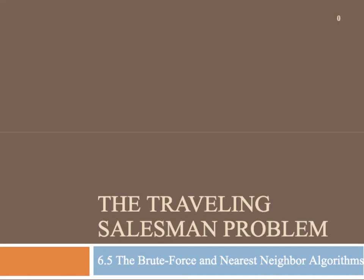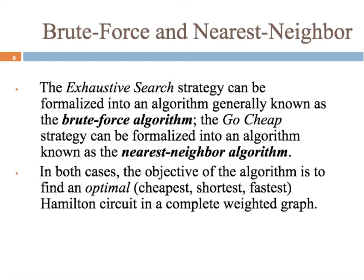This section is a continuation of the exhaustive search and go-cheap method. We're just going to give it a more formal name here: the brute force and nearest neighbor algorithms. So the exhaustive search strategy can be formalized into an algorithm generally known as the brute force algorithm, and the go-cheap we can call the nearest neighbor algorithm.